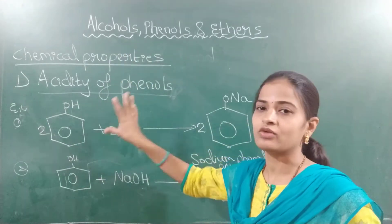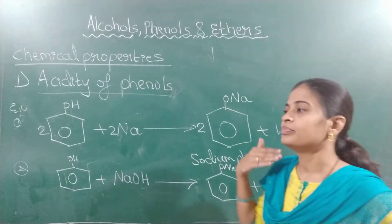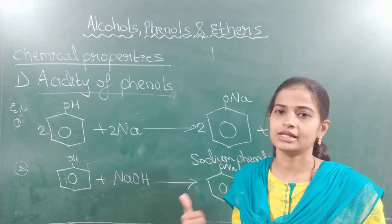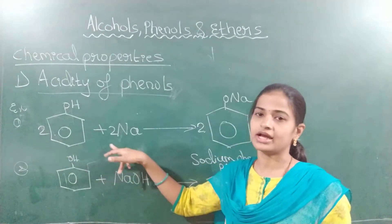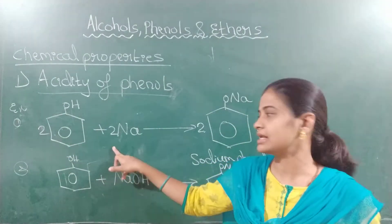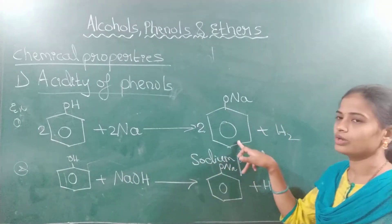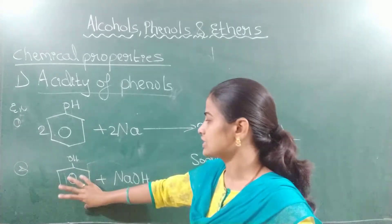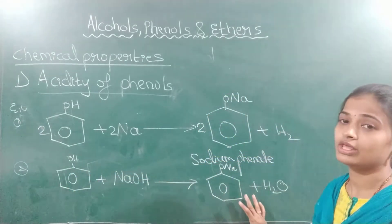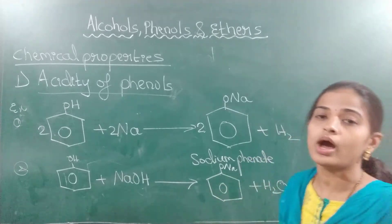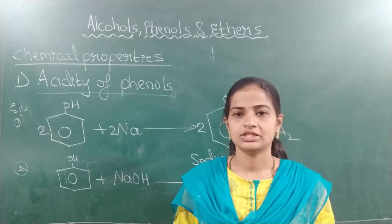These two reactions show that phenols are acidic in nature. That is the property of an acid: they react with highly electropositive metals to release hydrogen gas. Similarly, phenol reacts with sodium to release hydrogen gas forming sodium phenate, and phenol reacts with sodium hydroxide to form sodium phenate. These two are evidence that phenols are acidic in nature.